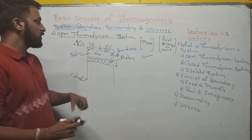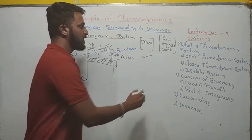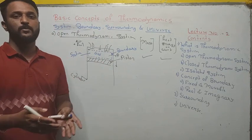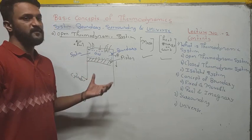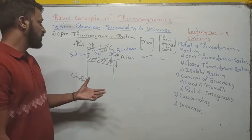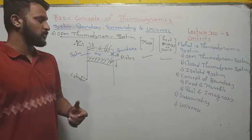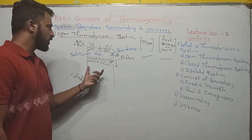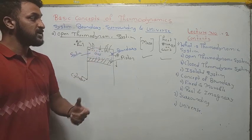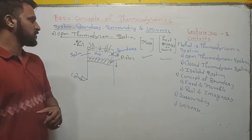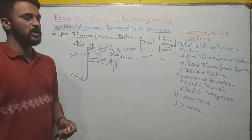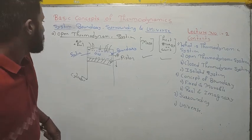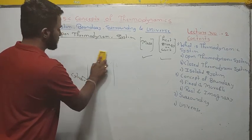In an open thermodynamic system, both mass and heat energy cross the boundary of the system. Such systems are called open thermodynamic systems. This is a very important point. You should draw the diagram of the heat engine or IC engine with valves as your example of an open thermodynamic system.